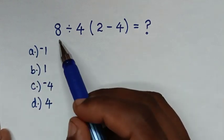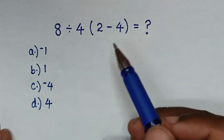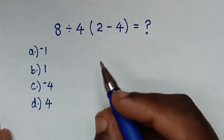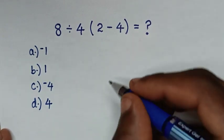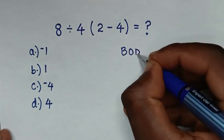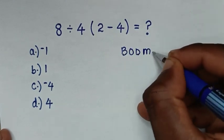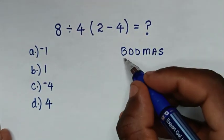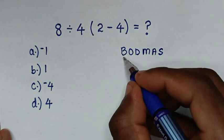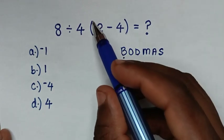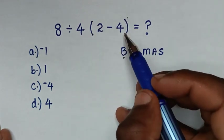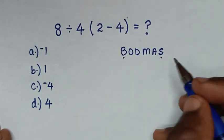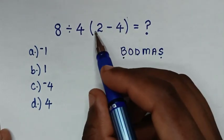From this order of operations problem, we will solve it by using the BODMAS rule. So we will write the rule, which is BODMAS. Whereas B is bracket — in here we have a bracket, and the operation inside the bracket is subtraction of 2 minus 4.